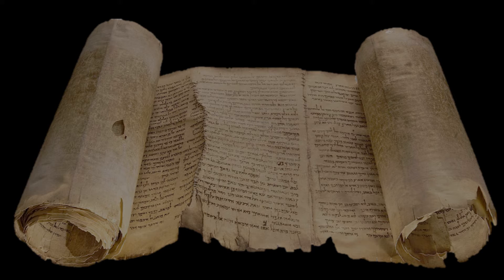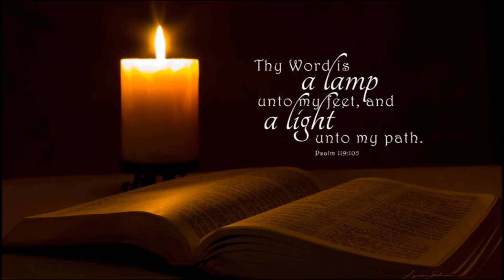Go to John chapter 20, verses 30 and 31: 'Many other signs truly did Jesus do in the presence of his disciples, which are not written in this book. But these are written that you might believe that Jesus is the Christ.' Jesus — humanity — is Christ, the Anointed One, or the Messiah. Both mean the same thing. Messiah means the Anointed One, Christ means the Anointed One; so Christ is equivalent to Messiah in the Old Testament.